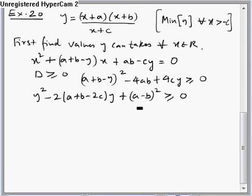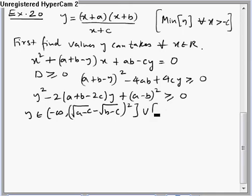So this is inequality in terms of y. Let's solve this quadratic inequality. And solution would be y belongs to minus infinity to root of a minus c minus root of b minus c whole square union root of a minus c plus root of b minus c whole square to infinity.